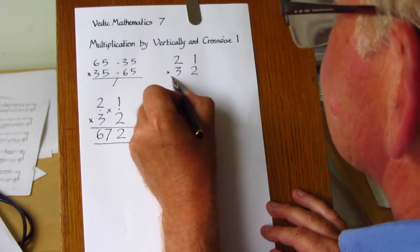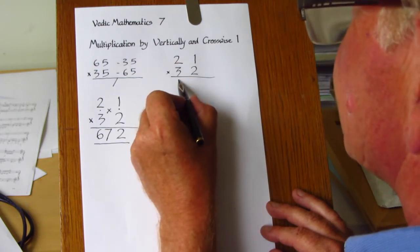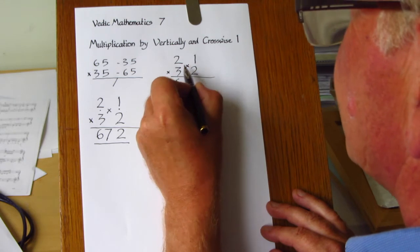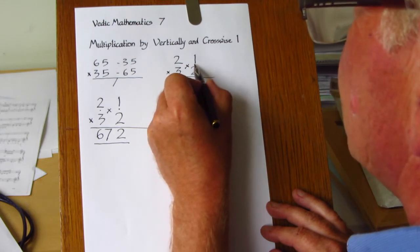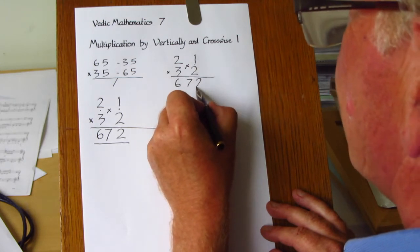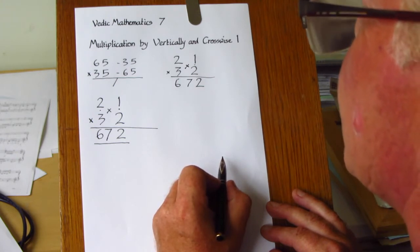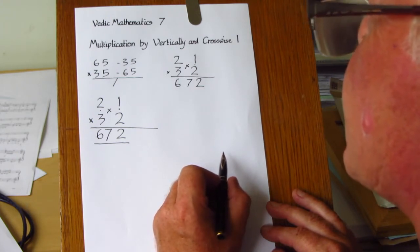we would multiply the two tens digits together, 2 times 3 is 6, and then crosswise 4 add 3 is 7, and then once 2 is 2. And in some cases that can be useful, particularly when multiplying decimal numbers together.